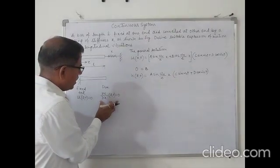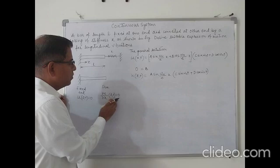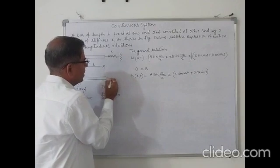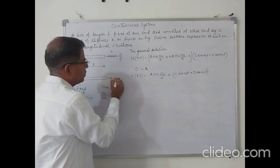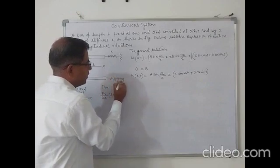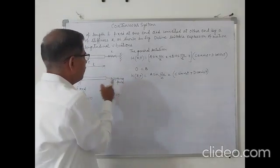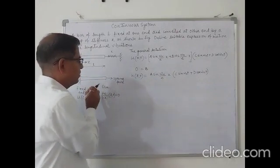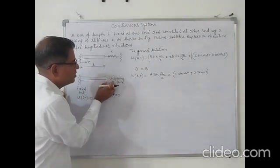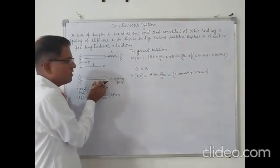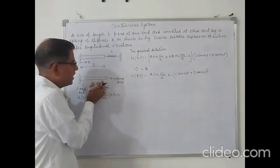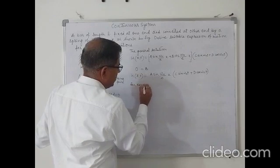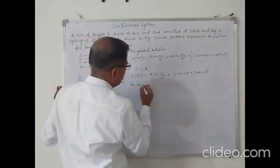At the free end, normally del u by del x equals 0, but here instead of that condition, there is a spring force applied at this end. The spring force equals the tensile force in the bar — the tensile force in the bar opposes the spring force, and because of that the system is in equilibrium. So the equilibrium condition gives: tensile force equals spring force.